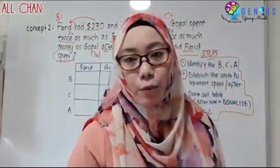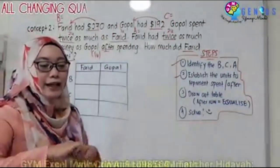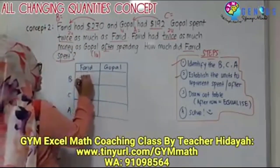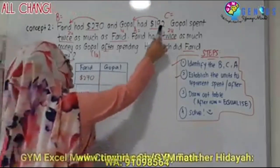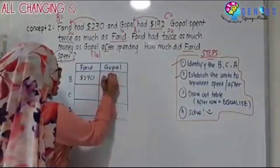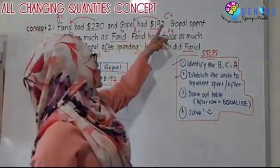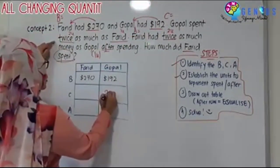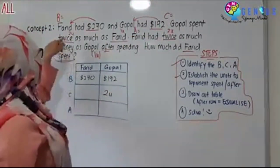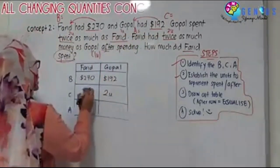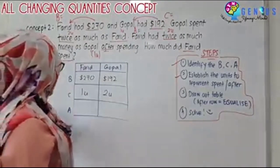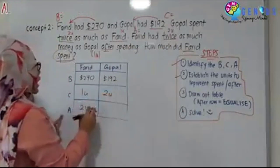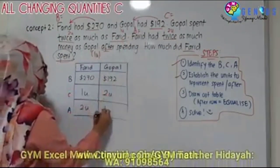We fill in the information we identified. Before: Farid had $270, Gopal had $192. Change: Gopal spent two units, Farid spent one unit. After: Farid had two units, Gopal had one unit. You see how I just identify and then pick and put into the box — it's very easy, much clearer than drawing out a model where you'd have to draw two sets and know what to transfer.